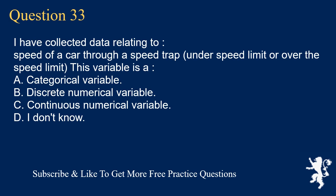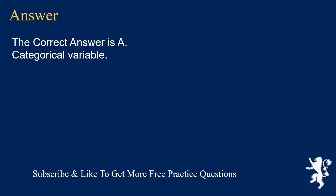Question 33: I have collected data relating to speed of a car through a speed trap — under speed limit or over the speed limit. This variable is A. a categorical variable, B. discrete numerical variable, C. continuous numerical variable, D. I don't know. The correct answer is A, categorical variable.